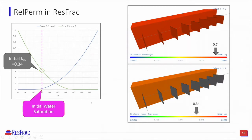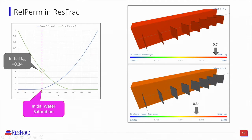Demonstrating this concept in ResFrac, I have a rel perm curve set on the left-hand side as well as images from a simulation. My initial water saturation is 30%, indicated by the vertical pink line, and you can see the initial saturation is just about 30% — oil saturation is 70%. If I look at the property oil rel perm matrix, I can visualize the relative permeability of the oil phase in ResFrac. That orange color is about 0.34, which lines up on the green curve at 0.34 at a water saturation of 30%.